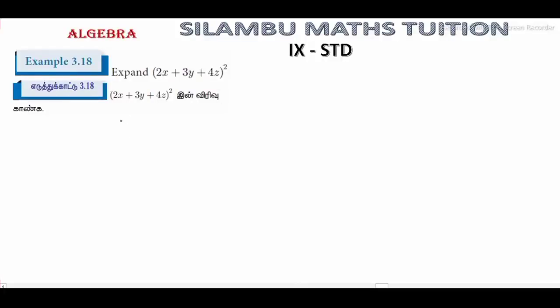Hi students, this is Silambu Maths Tuition, 9th standard, example 3.18. Expand 2x plus 3y plus 4z whole square. In Tamil, 2x plus 3y plus 4z the whole square in verivu kaanga.